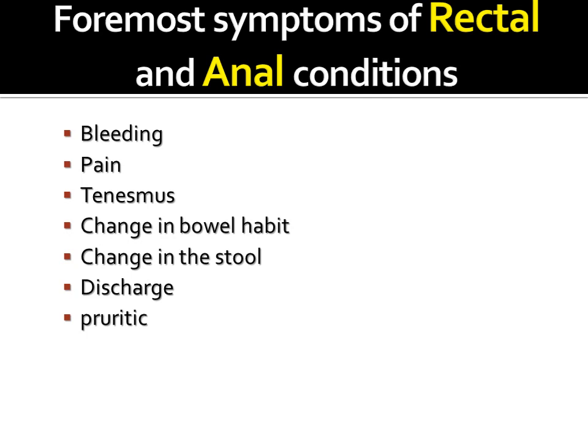The first and foremost symptoms with which a patient first comes to OPD for rectal and anorectal conditions include: bleeding, perianal pain, pain in the anal canal, tenesmus, abdominal distension, change in bowel habit — sometimes diarrhea, sometimes hard stool, sometimes semi-solid stool — change in the stool, discharge coming from the anal canal, and pruritus meaning itching in the anal canal.